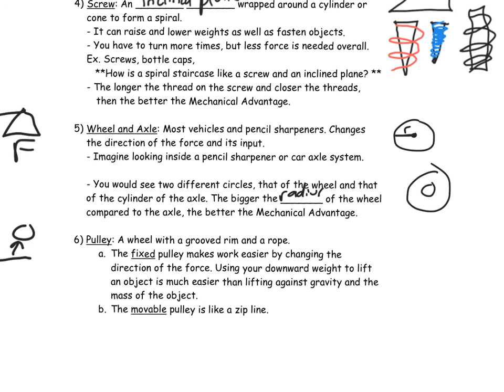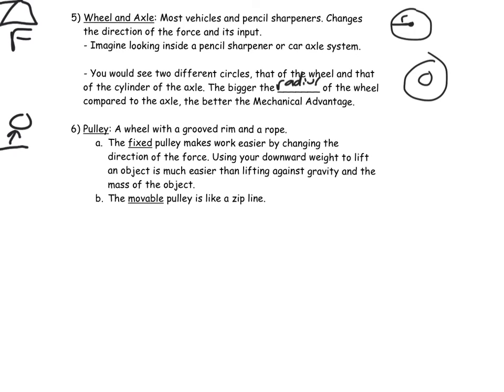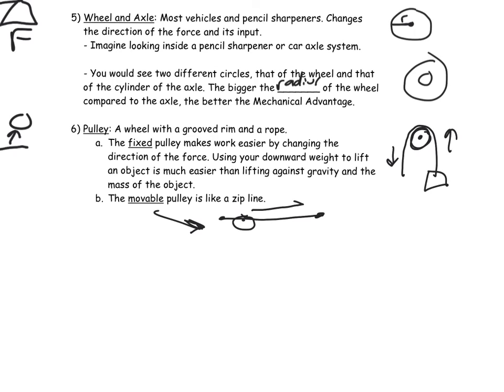Finally, we have pulleys. There's a required lab on pulleys in the activity list that explains the different ways pulleys provide mechanical advantages. We have two kinds: a fixed pulley, where the wheel stays in place and the rope moves — you pull down on one side and the other side lifts up. A movable pulley is the opposite: the rope stays put and the wheel moves, like a zip line. That ends our benchmark on simple machines — thanks, guys!